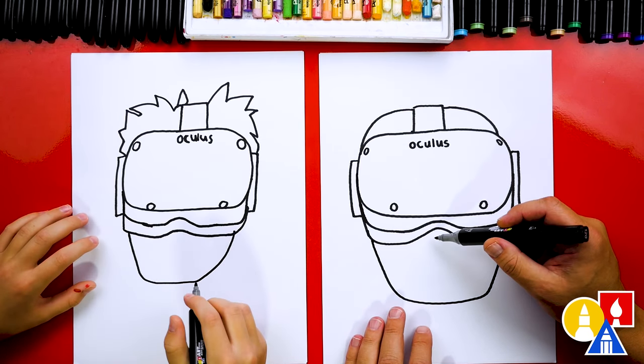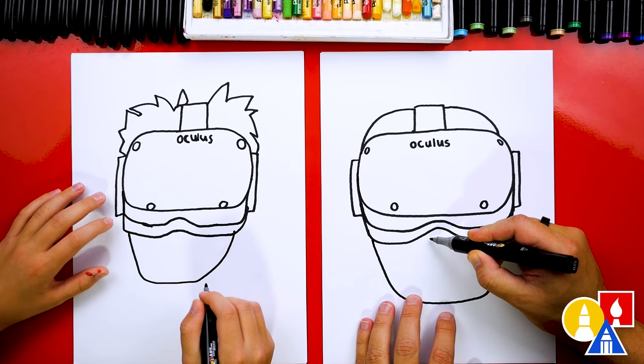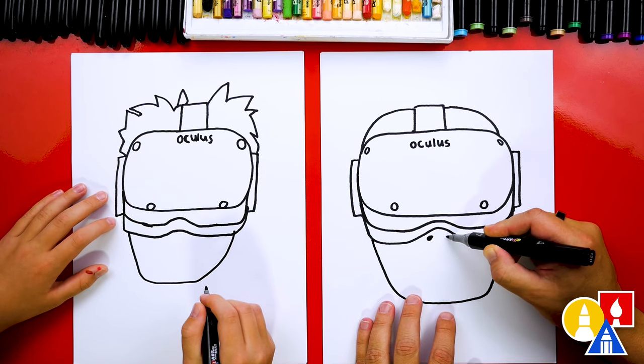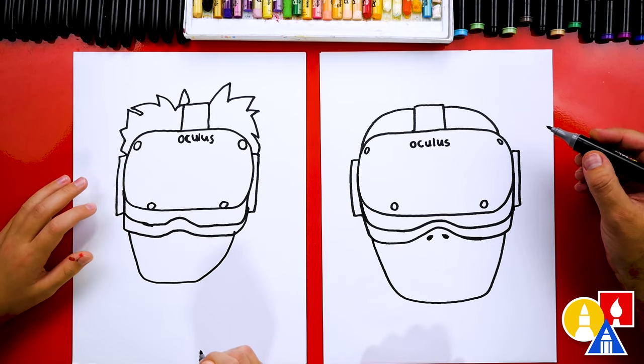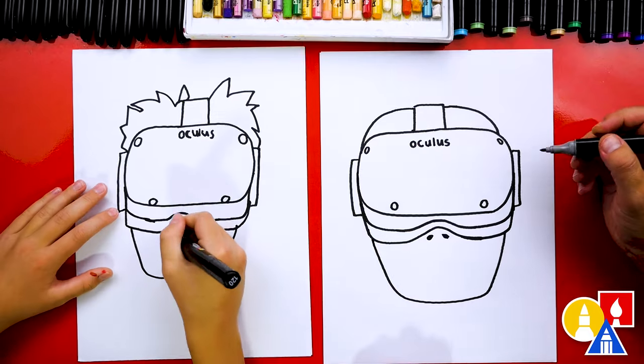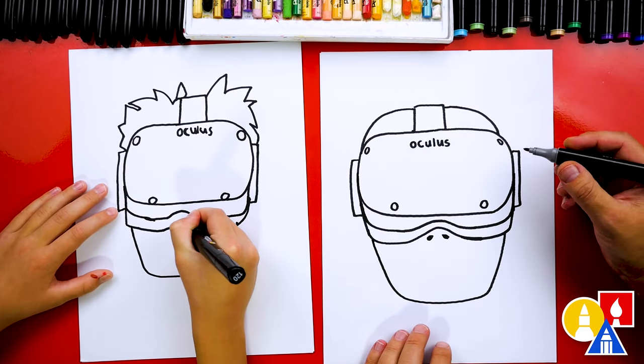Next, let's draw our nose. And when you're wearing the Oculus, especially you, you can barely see your nose. Mine would probably stick out further, but I'm just going to add two little nostrils because that's basically all you can see. You could also draw the nose differently if you want.